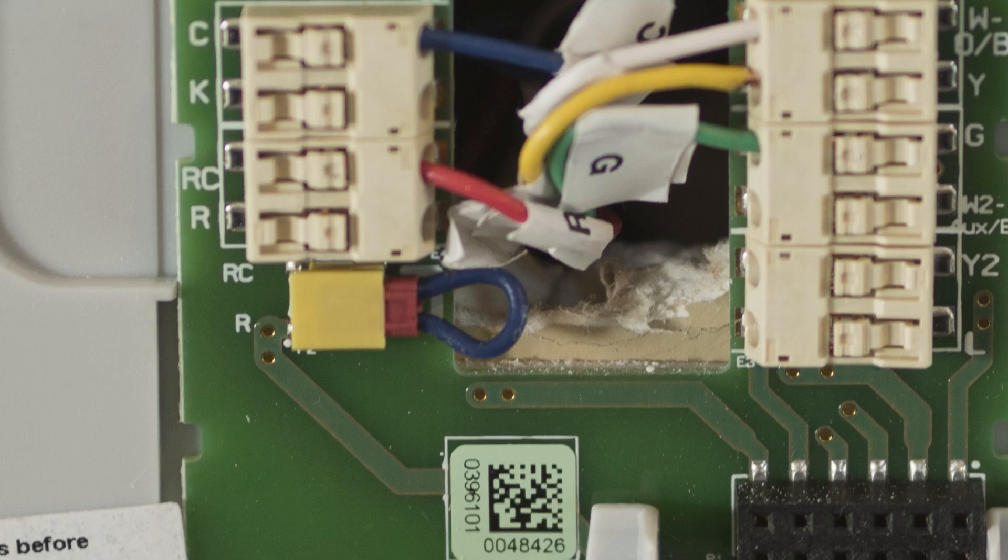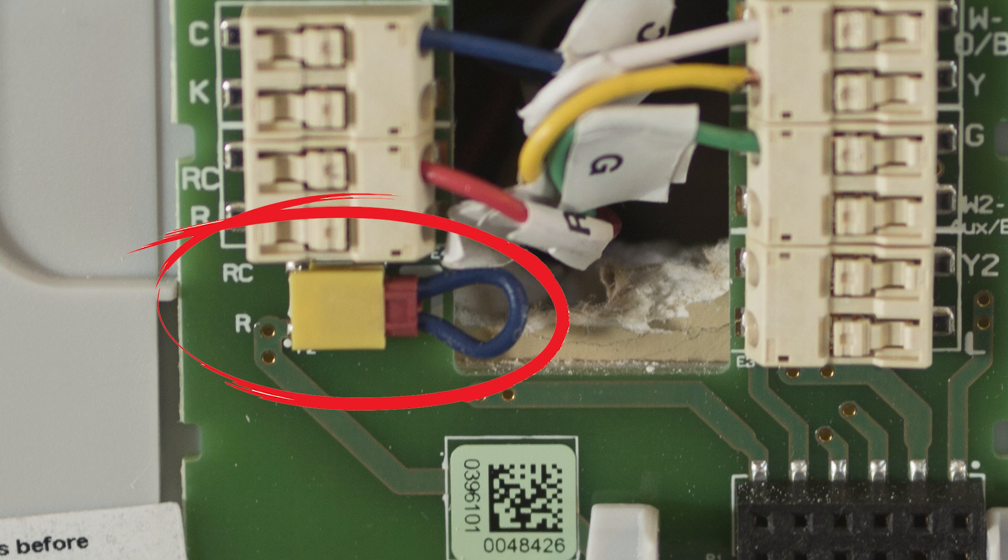You may notice a wire that looks like this, known as a jumper wire. Note if you have a jumper wire between the R and RC terminals.